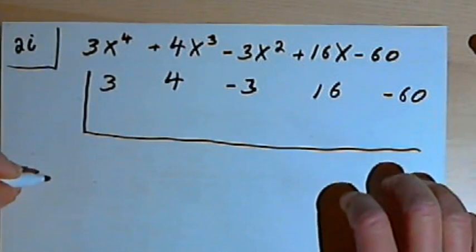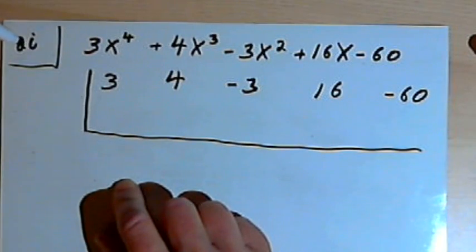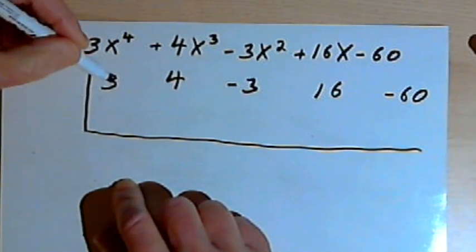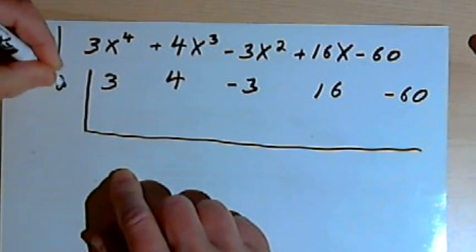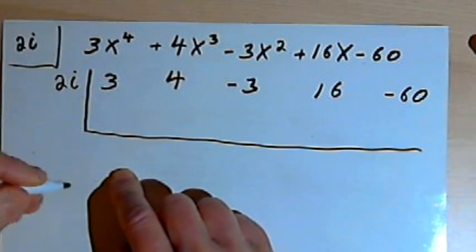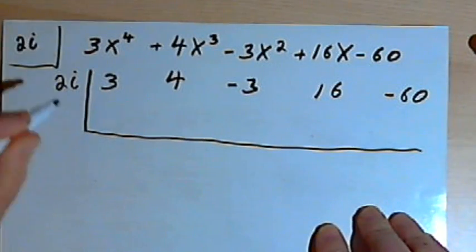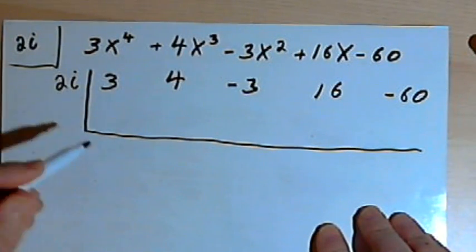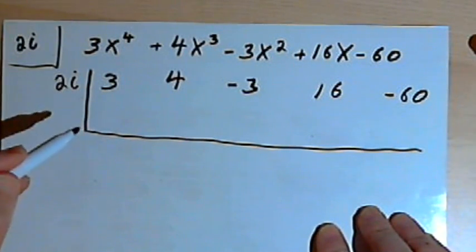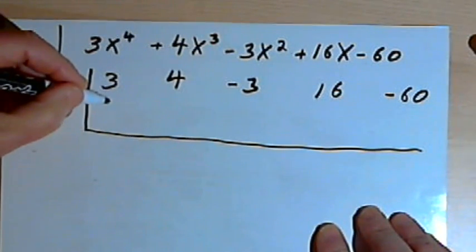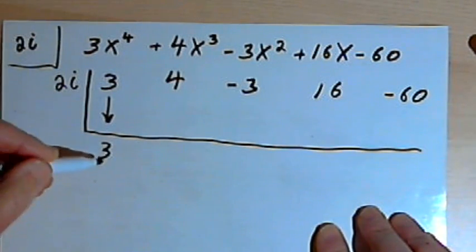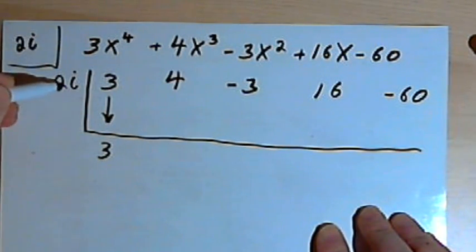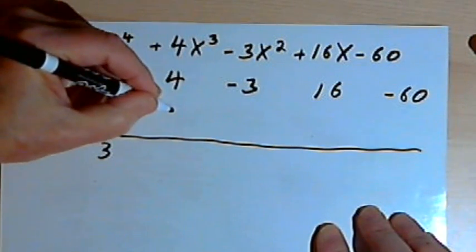Put a half box around that. And then we're told that 2i is a zero of this function. Whatever zero we're given, we just use that as the divisor. Just as it is, we don't change its sign. Now we proceed. We're going to follow the same rules we used for regular synthetic division. We bring down the first number, the 3, and we multiply that number that we brought down, the 3, and the divisor, 2i. So we get 6i. We write that in the next column.